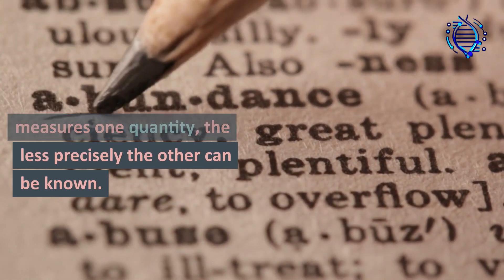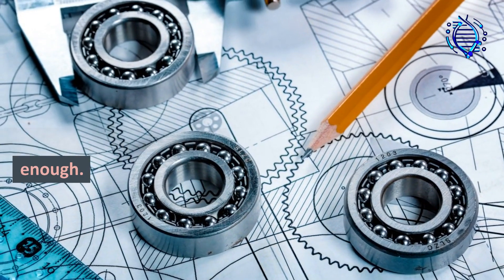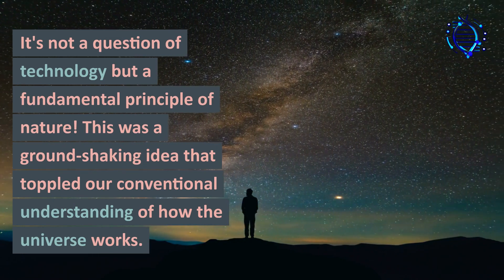The more precisely one measures one quantity, the less precisely the other can be known. Now this wasn't because our instruments weren't precise enough. It's not a question of technology, but a fundamental principle of nature.